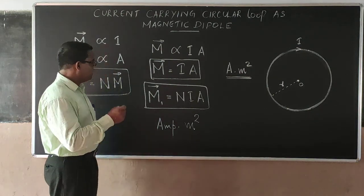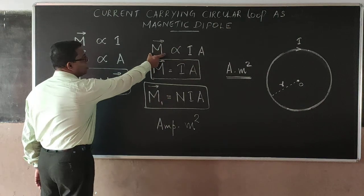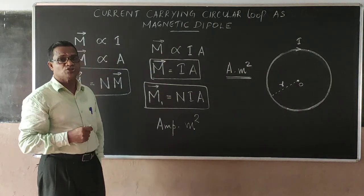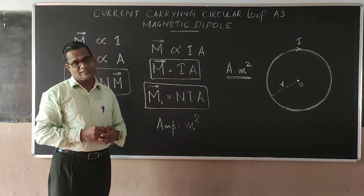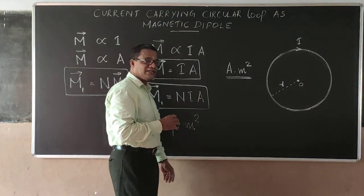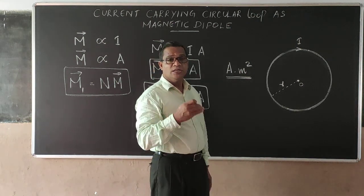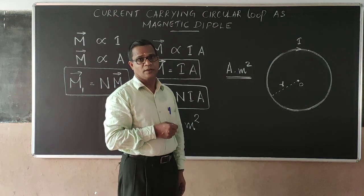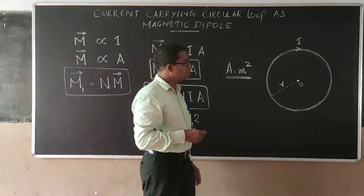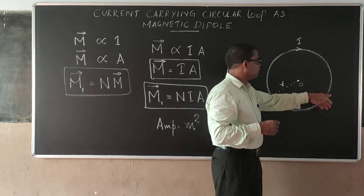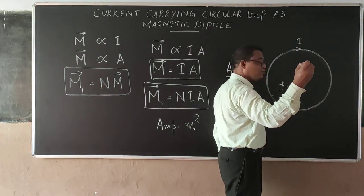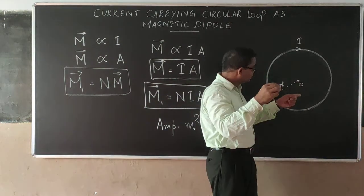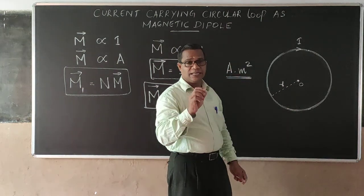The dipole moment is a vector quantity, so what is the direction of this magnetic dipole moment vector? The magnetic dipole moment vector is directed from the south pole to the north pole through the axis. Here the south pole is on one side and the north pole is on the other side, so the dipole moment vector points through the axis of the loop.